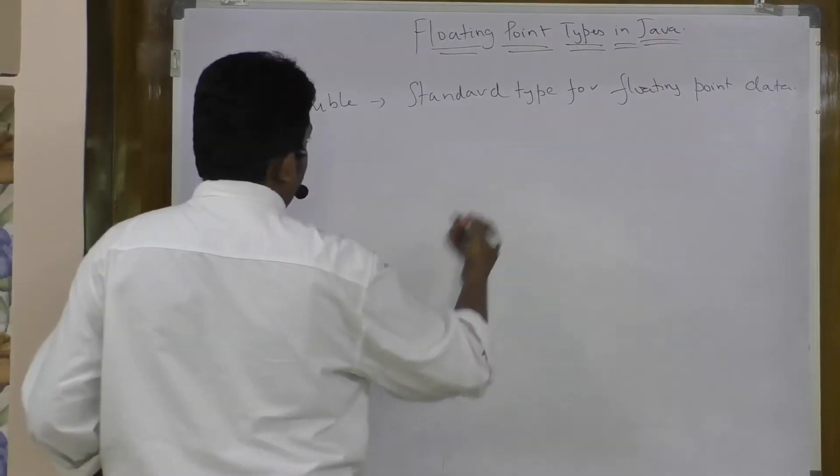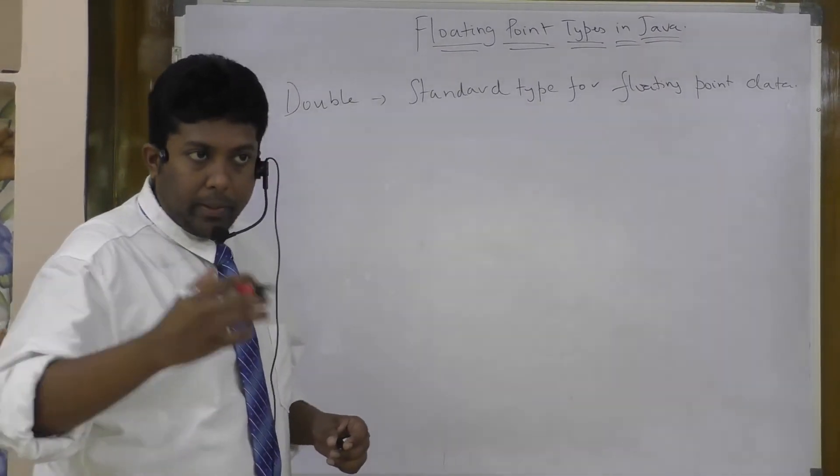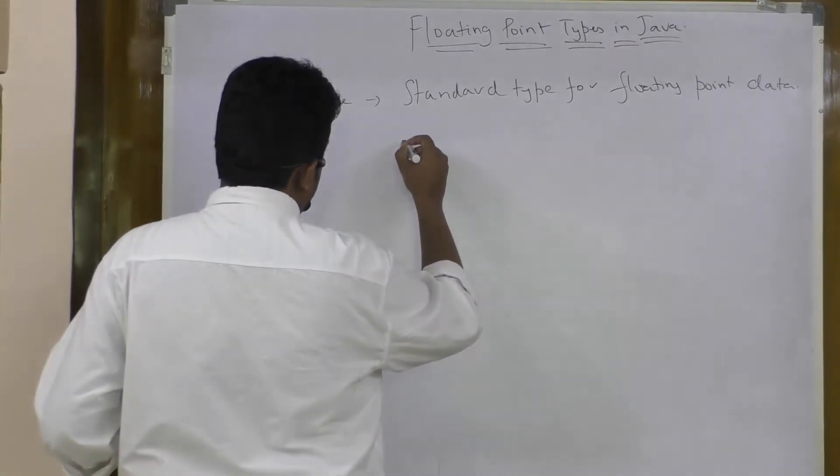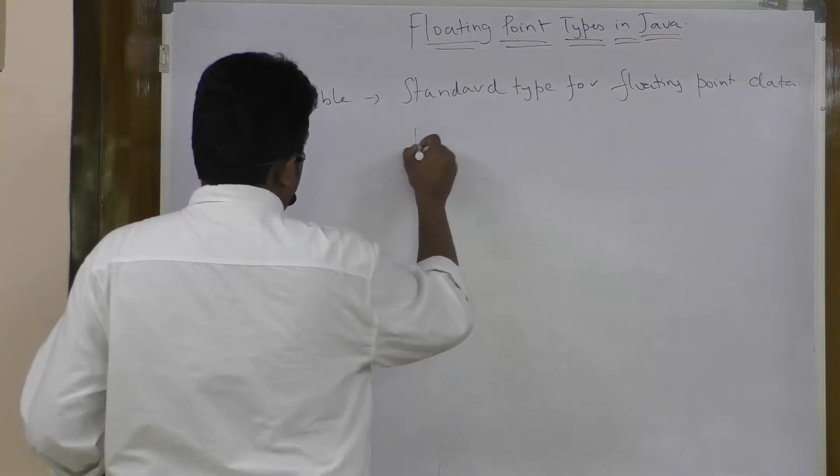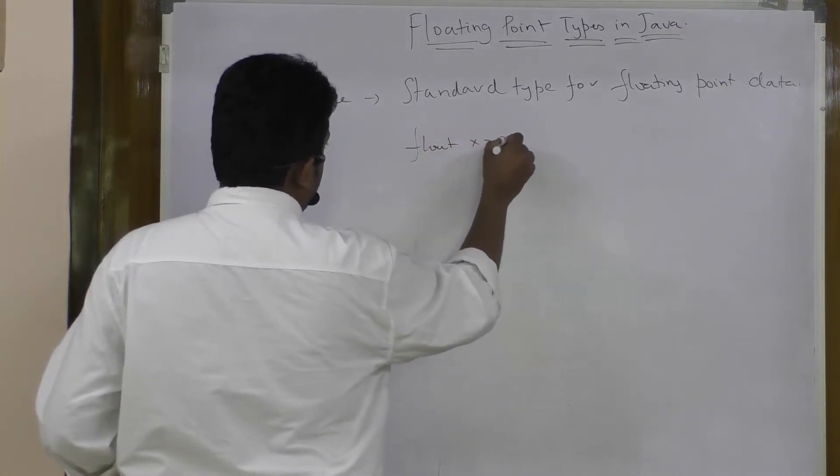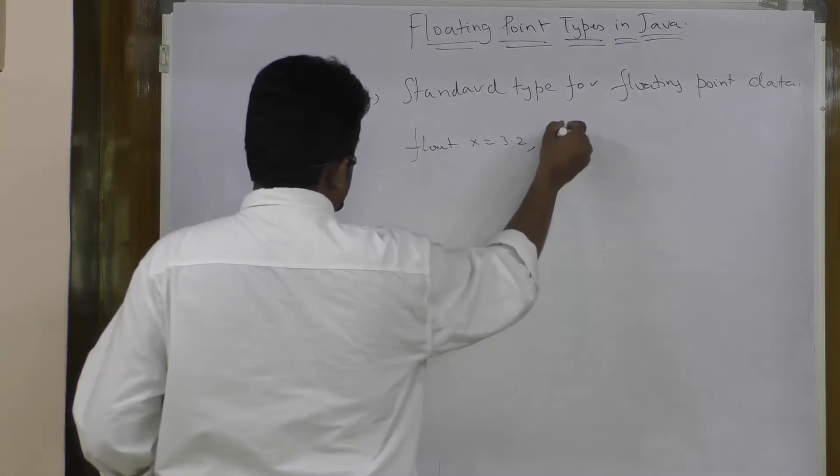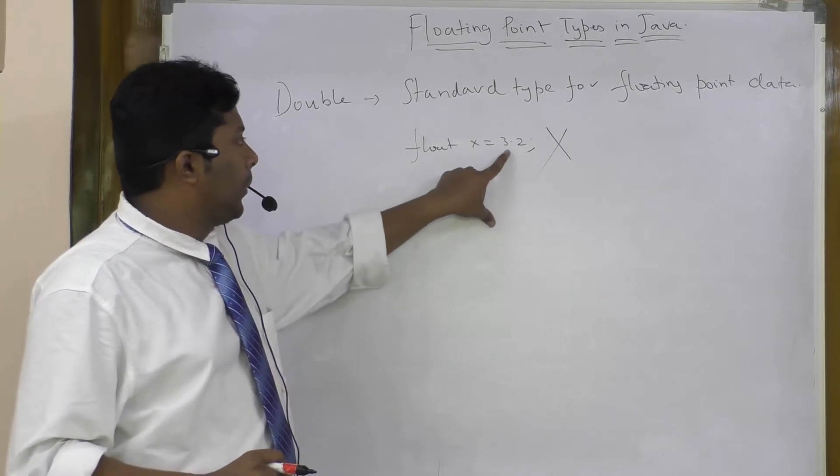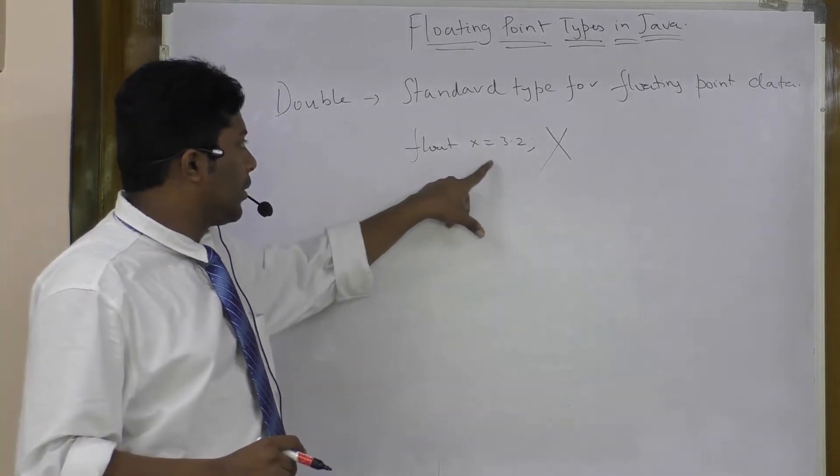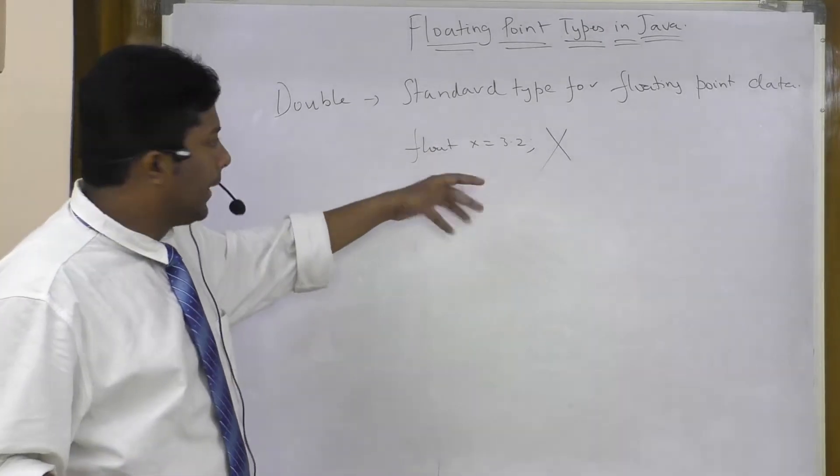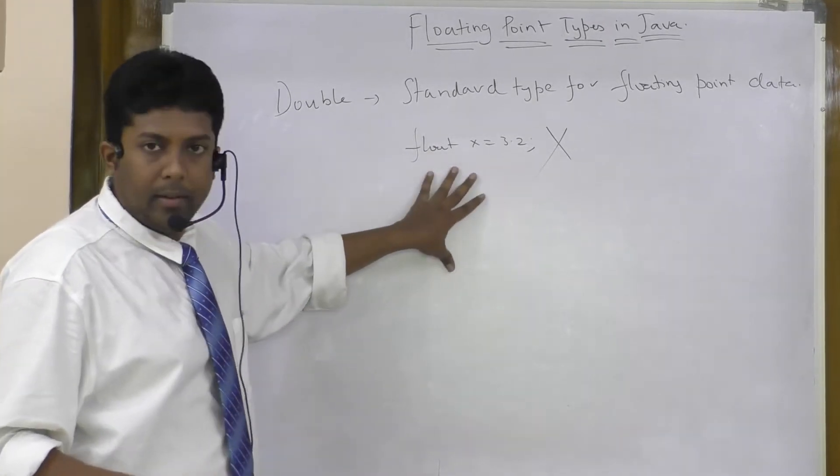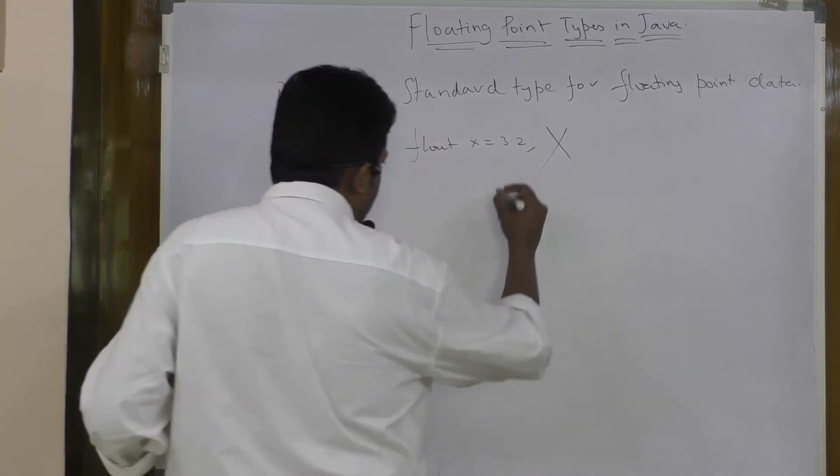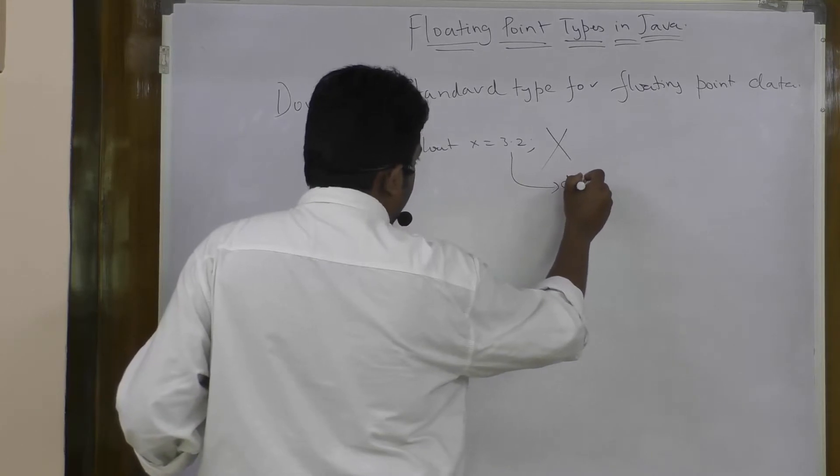In Java, by default all the floating point data are of type double. For example, if you are writing something like this: float x is equal to 3.2, this is not going to work in Java. You might get doubt - we are getting a floating point data, and here it is float type which is used to handle the floating point data. You might get doubt that why this doesn't work in Java. This does not work in Java because, as I said, by default all the floating point values are of type double.